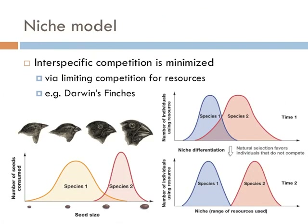In community ecology, the niche model predicts that competition between species is limited because species that live in a specific area tend to use different resources. A great example is Darwin's finches. On a given island, there may be many different species of finches, but the niche model predicts they differ by beak size. Species with smaller beaks eat smaller seeds, while species with larger beaks eat larger seeds, limiting competition for limited resources.